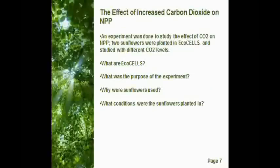An experiment done by UC Santa Cruz studied the effect of CO2 on NPP. Two sunflowers were planted in eco-cells and studied under different CO2 levels. Eco-cells are environmentally controlled, naturally lit, open-flow systems at the mesocosm scale. One eco-cell was kept under ambient atmospheric CO2 levels and the other under elevated CO2 levels. The purpose was to study the effect of elevated CO2 on photosynthesis and respiration, and to see whether NPP increases in proportion to the total increase in photosynthesis.